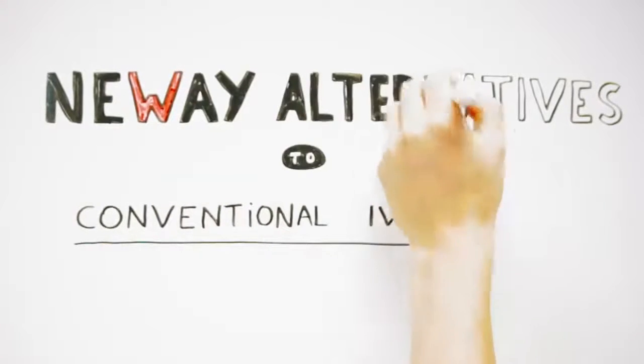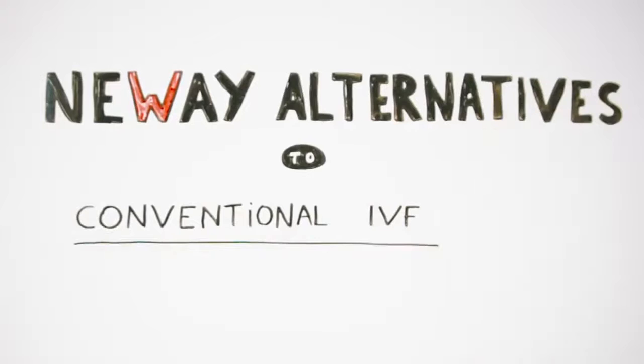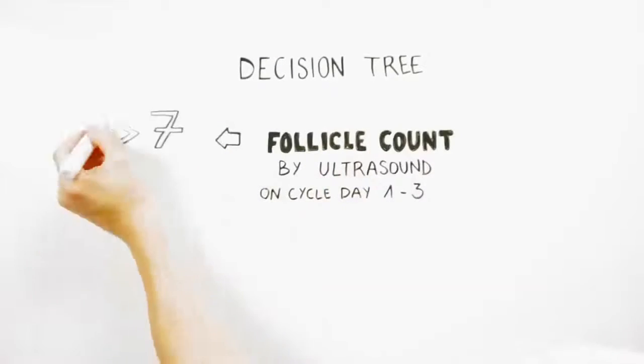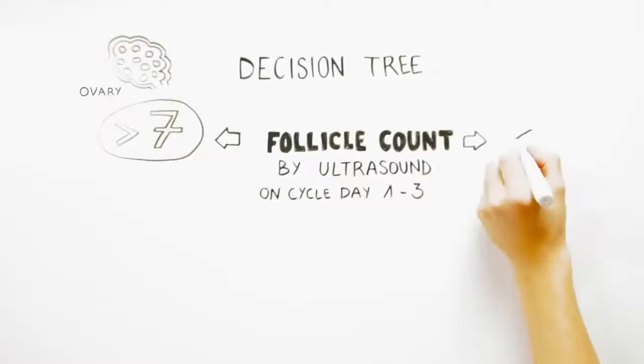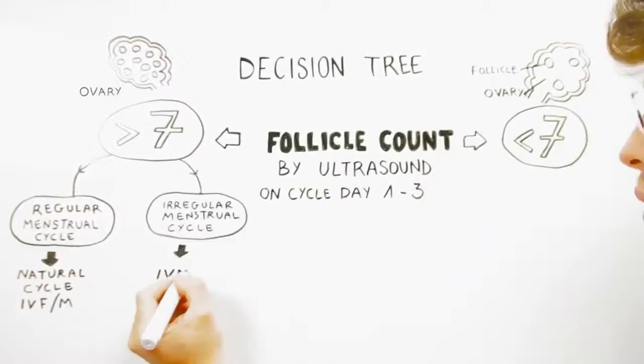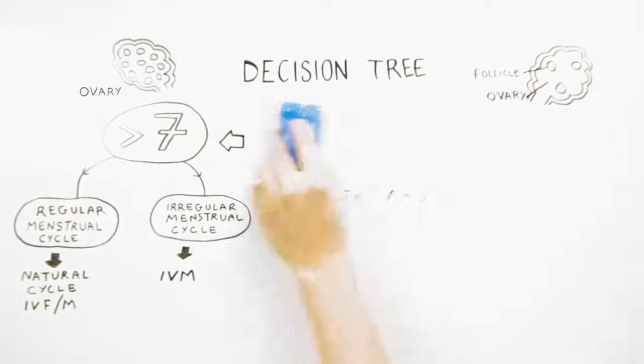In order to select the most appropriate treatment, we use the decision tree below. The fundamental principle behind this decision tree is that in order to follow the IVM or natural cycle IVF-M approach, a woman needs a good number of follicles in her ovaries. If the ovaries have fewer follicles, more traditional approaches are followed.